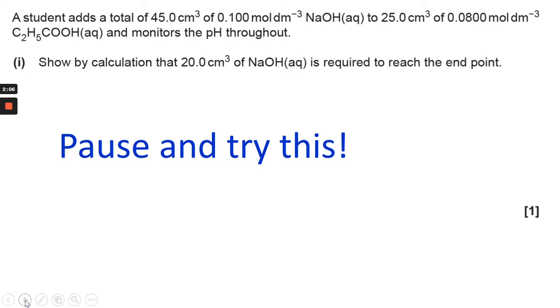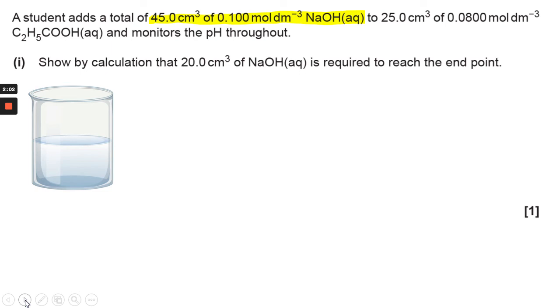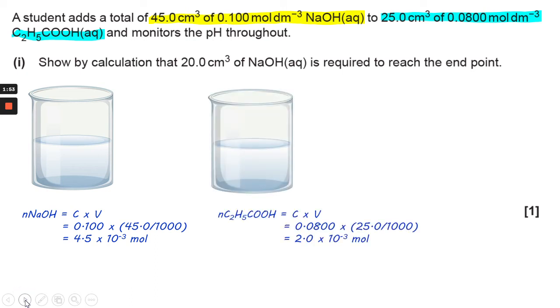So I'm now assuming you've had a go at that. And again, we take our two separate components and we work out how many moles are in each one. And for our ethanoic acid or propanoic acid, I should say, again, the concentration times volume is 2.0 times 10 to the minus 3 moles.